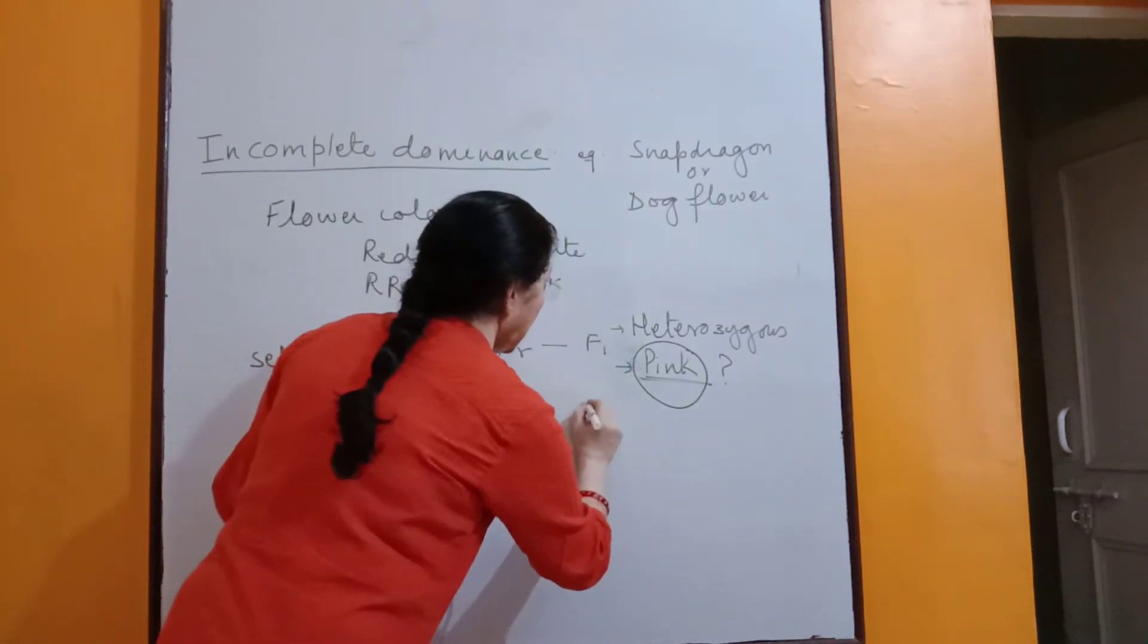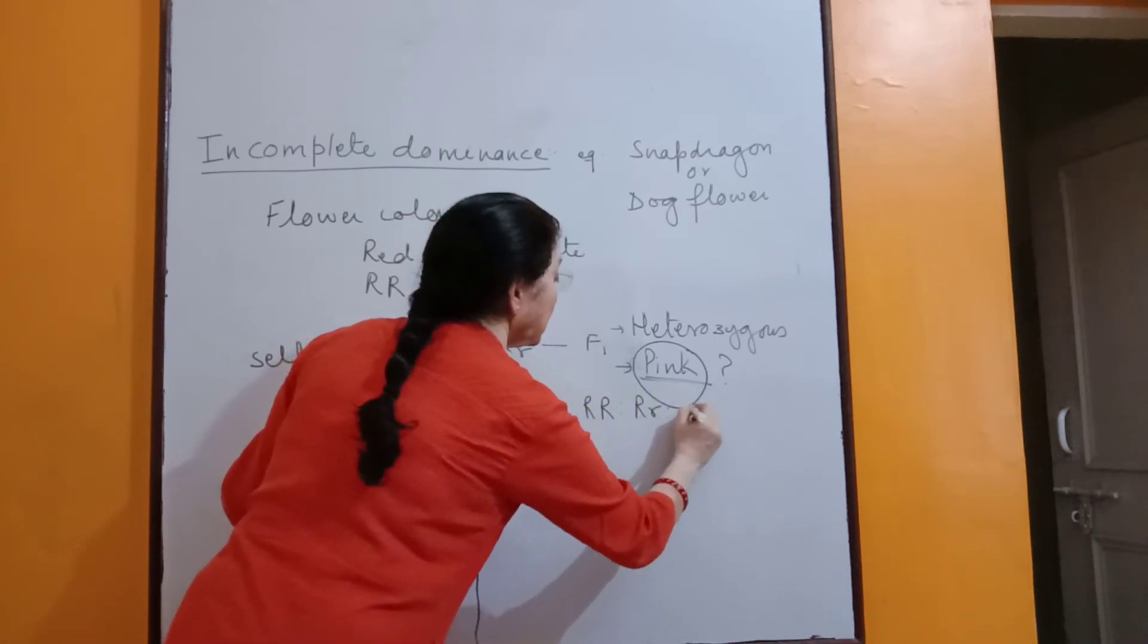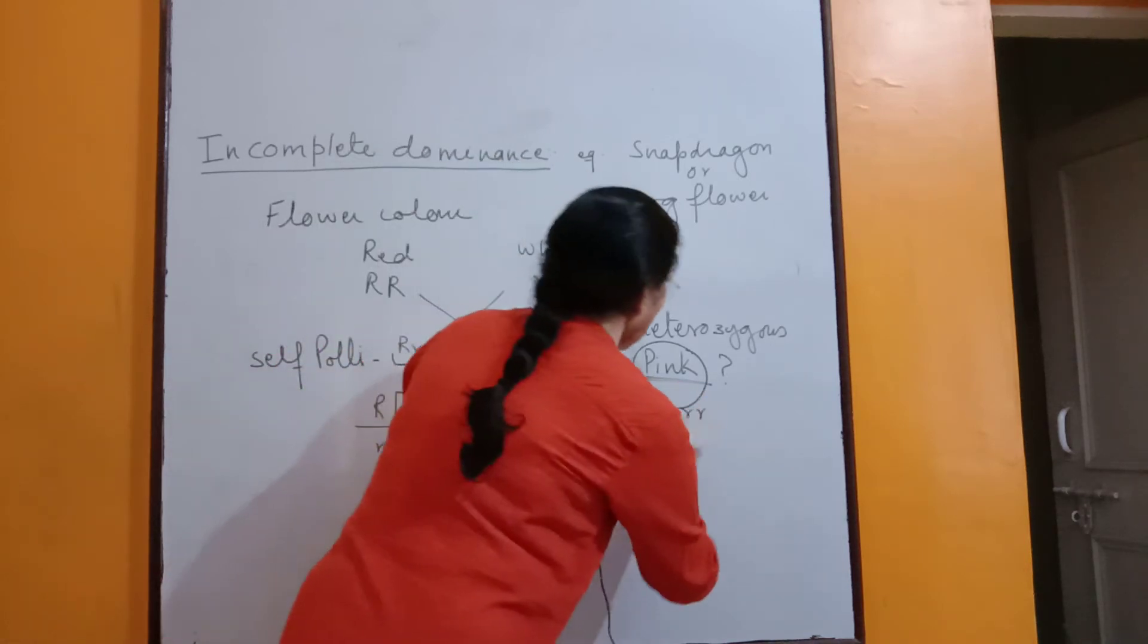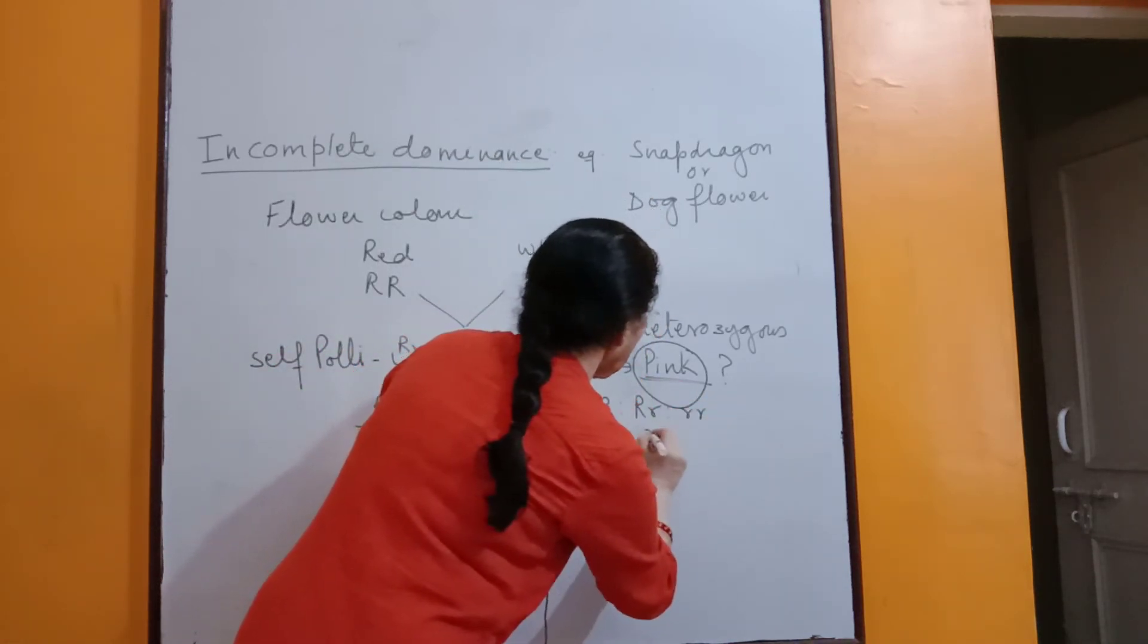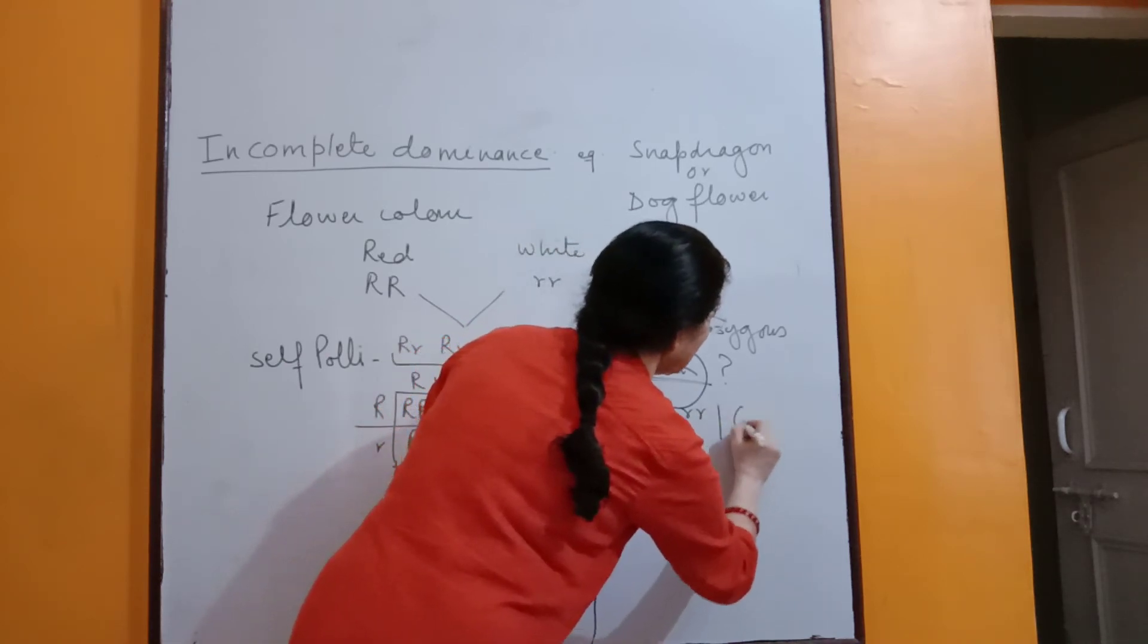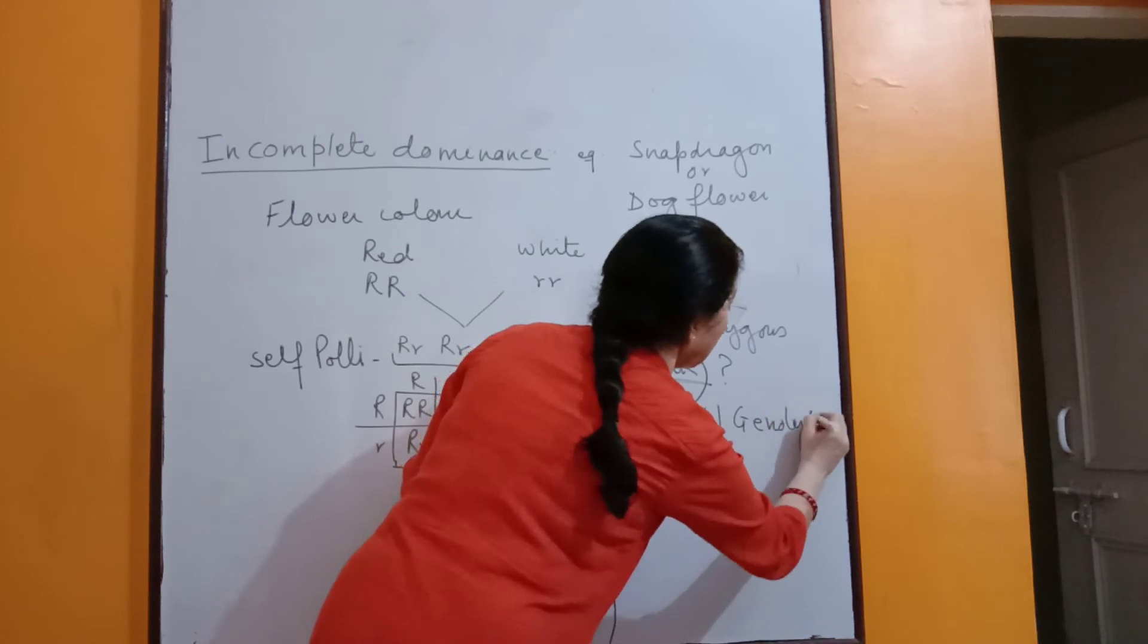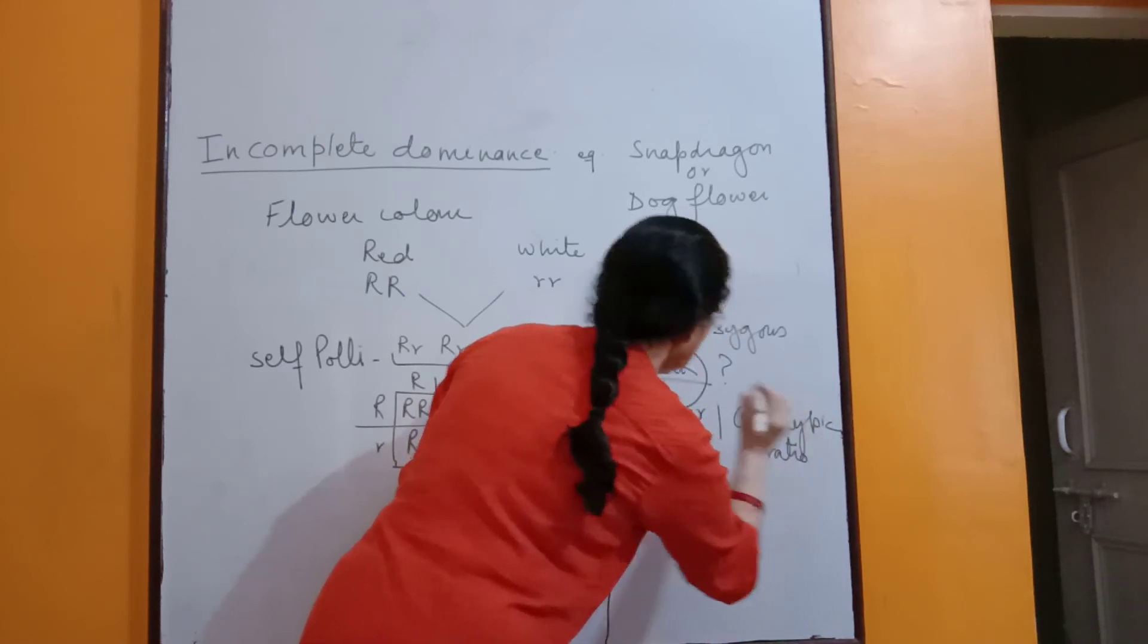This shows homozygous is to heterozygous is to homozygous. This is the genotypic ratio and it was 1 is to 2 is to 1. This is genotypic ratio, ratio of their genotype.